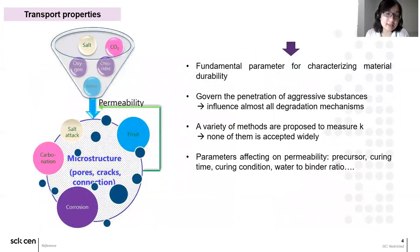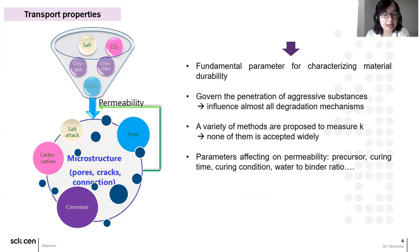Indeed, there are many aggressive substances in the environment harmful to AAM materials, like sulfate, carbon dioxide, chloride, and water, which cause phenomena such as sulfate attack, carbonation, corrosion, and frost in the structure of the materials. And this accelerates the deterioration process of these materials. Therefore, permeability is a fundamental parameter for assessing the durability of AAM.